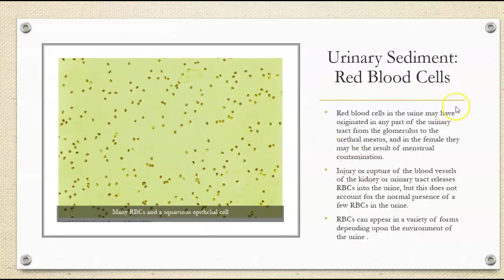When we start out looking at urinary sediment, one of the most common things we're going to see are red blood cells. They can have originated anywhere in the urinary tract from the glomerulus all the way down to your urethral meatus. They can be a contamination from a female's menstrual cycle. We can see injury or rupture of the vessels of the kidney or urinary tract releasing red cells into the urine. But it doesn't account for the normal presence of a few red cells in the urine, and we can see red cells in different forms depending on the environment of the urine.